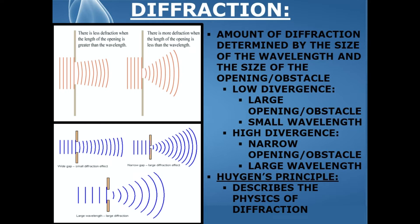A low amount of divergence happens with a large opening or obstacle and a small wavelength. A high amount of divergence of the ultrasound beam occurs with a narrow opening or obstacle and a large wavelength.